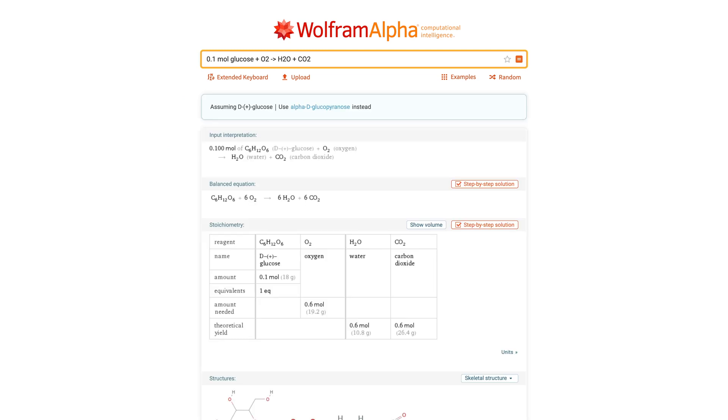The first thing that Wolfram Alpha generates is the interpretation of your query. Make sure that this is what you had in mind, otherwise more detail will be needed.